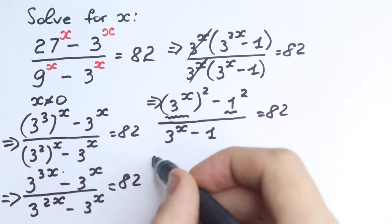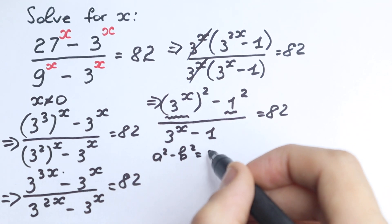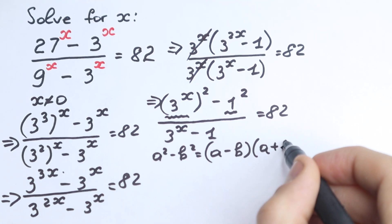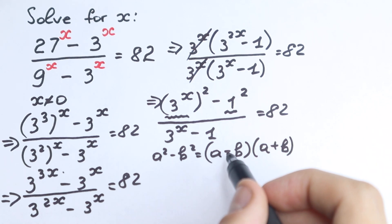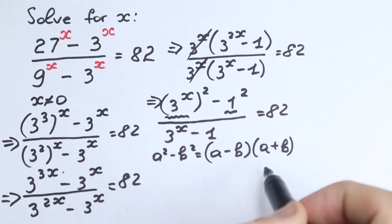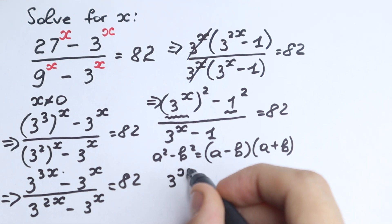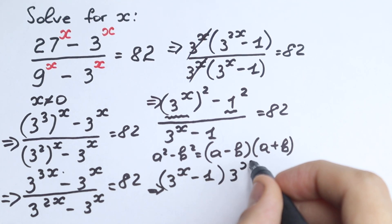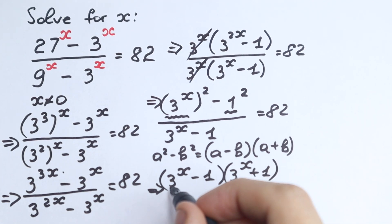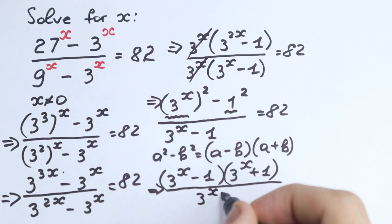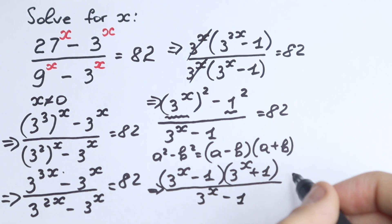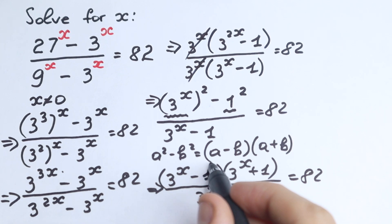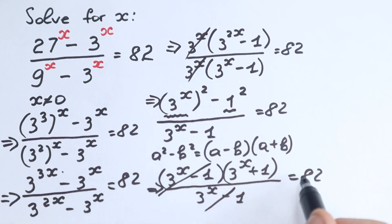Applying the difference of squares formula: a² minus b² equals (a minus b)(a plus b). Our numerator factors as (3 to the x minus 1) times (3 to the x plus 1), over the denominator (3 to the x minus 1), equal to 82. We can easily cancel (3 to the x minus 1), and we're left with 3 to the x plus 1 equal to 82.